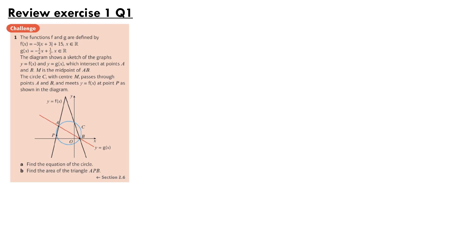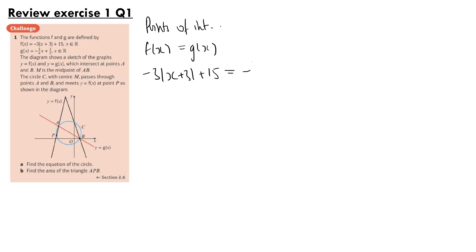A good place to start would be to find the points of intersection A and B, by setting f(x) equal to g(x). So we have minus 3 times the modulus of x plus 3, plus 15, is equal to minus 3 quarters x plus 3 halves. From the diagram there are two solutions: one where x plus 3 is positive, and the other where it is negative.